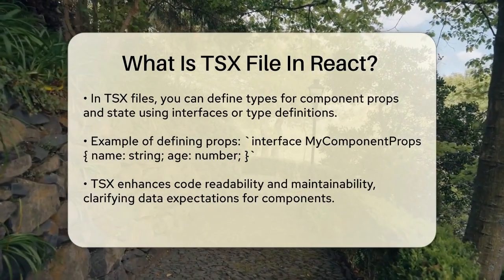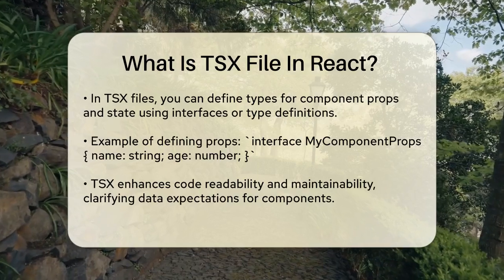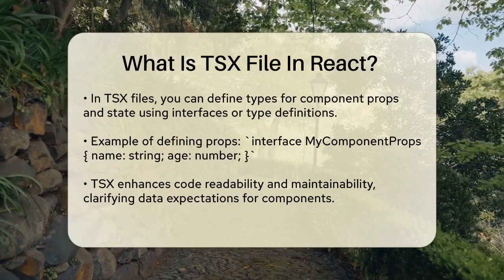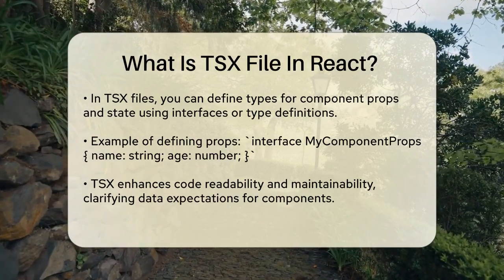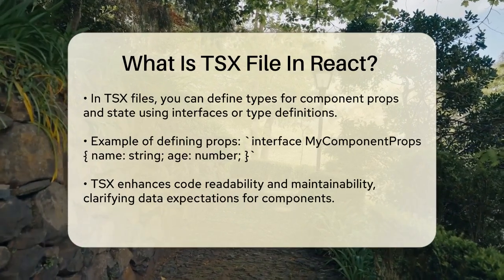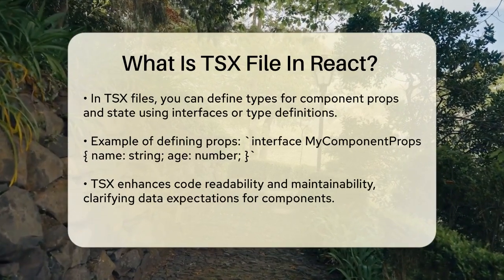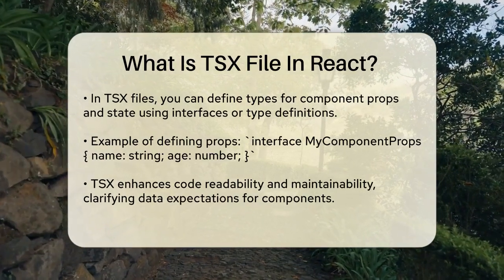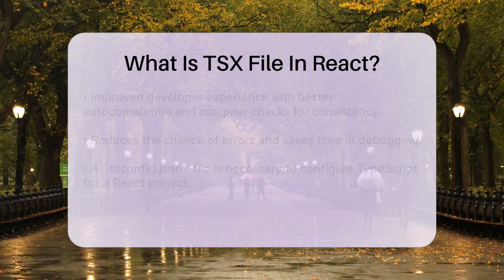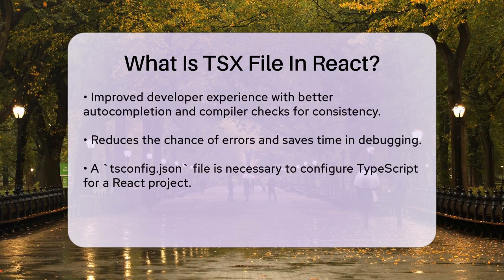Here's an example of how this might look: interface MyComponentProps { name: string; age: number; } const MyComponent: React.FC<MyComponentProps> = ({ name, age }) => { return <div>{name} is {age} years old</div>; }